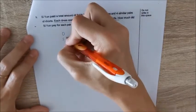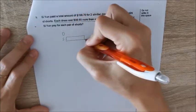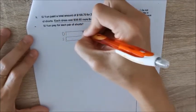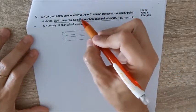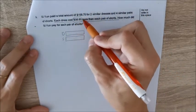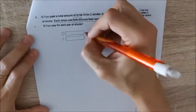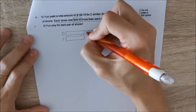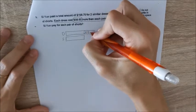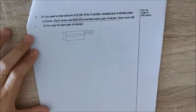So the shorts, I'll just draw it as one unit. But for the dress, I'll draw it as one unit. And can you see that it is $38.60 more? So it has an extra box of $38.60.